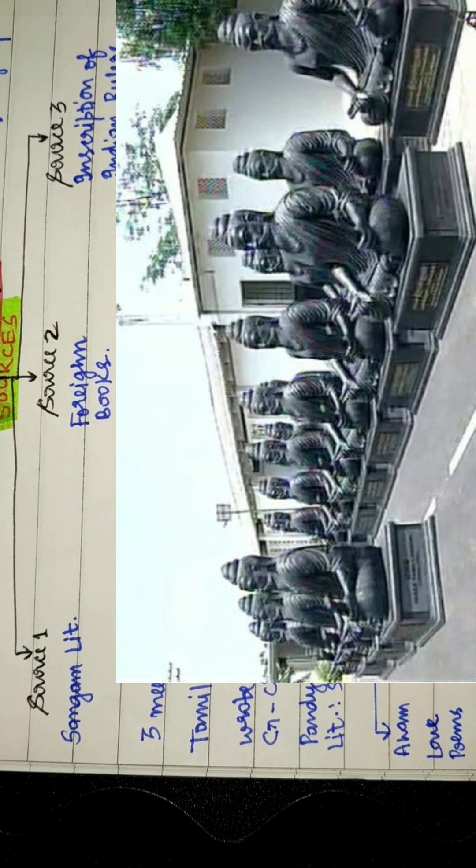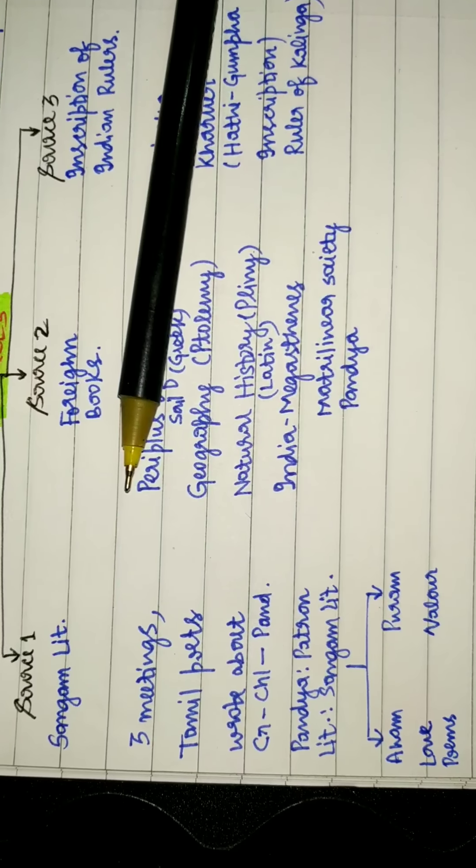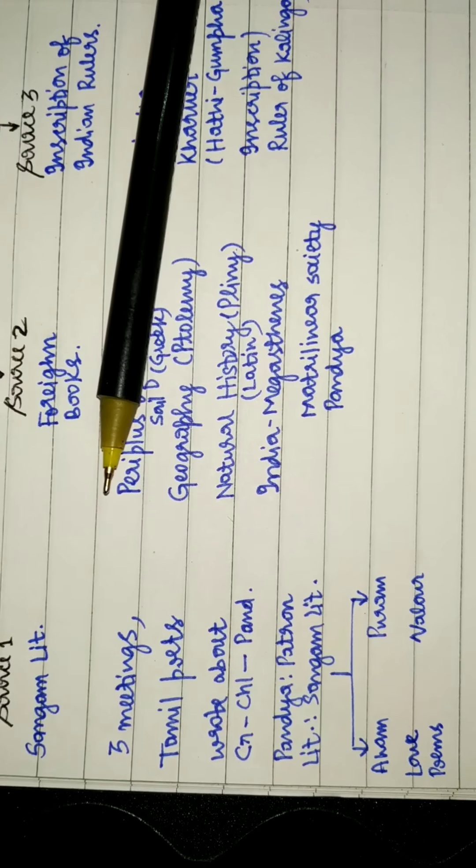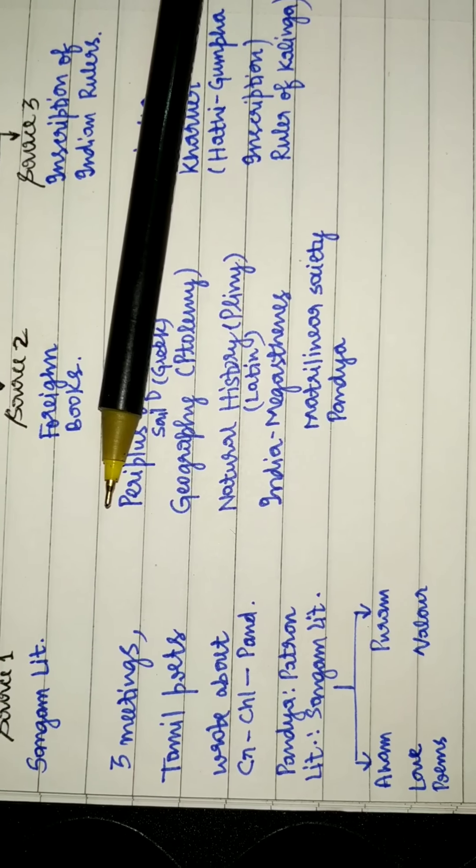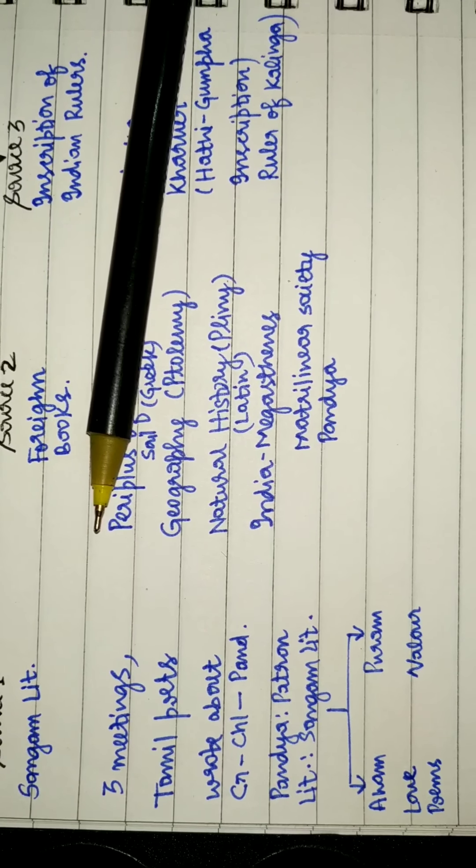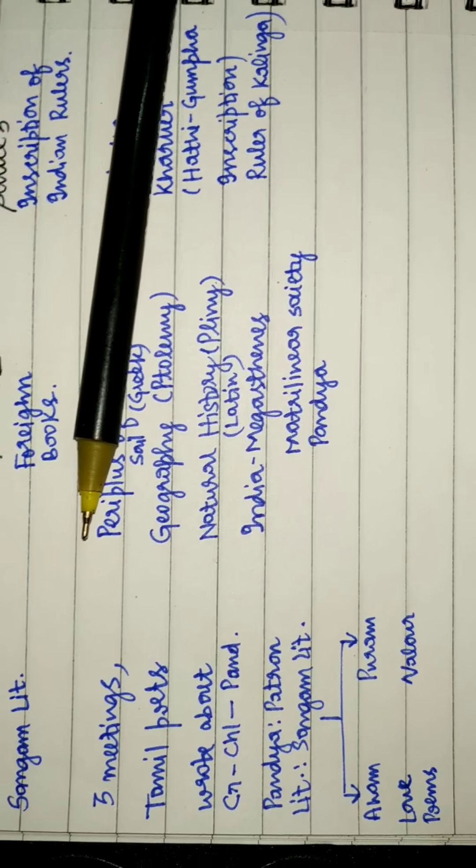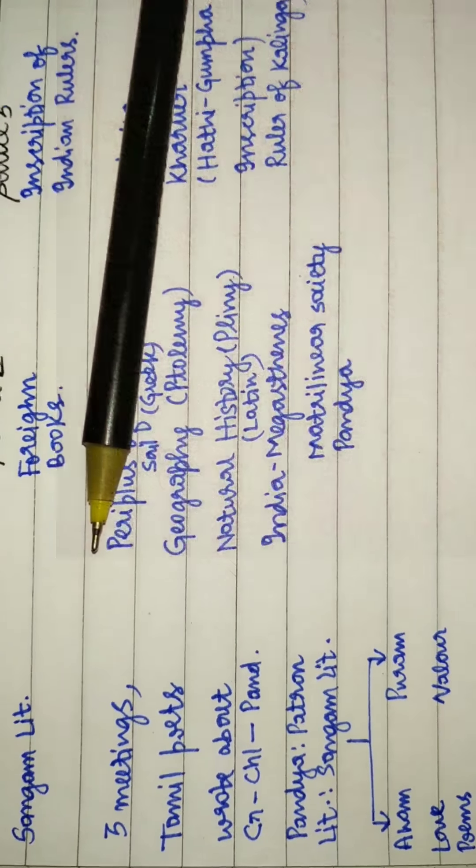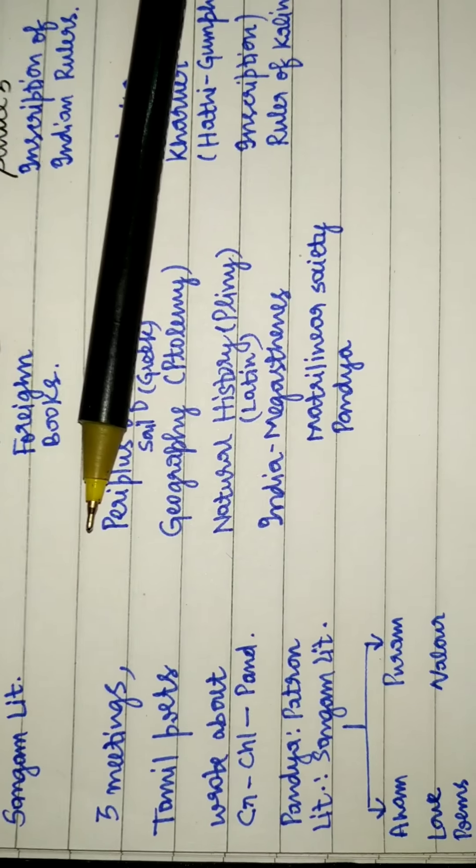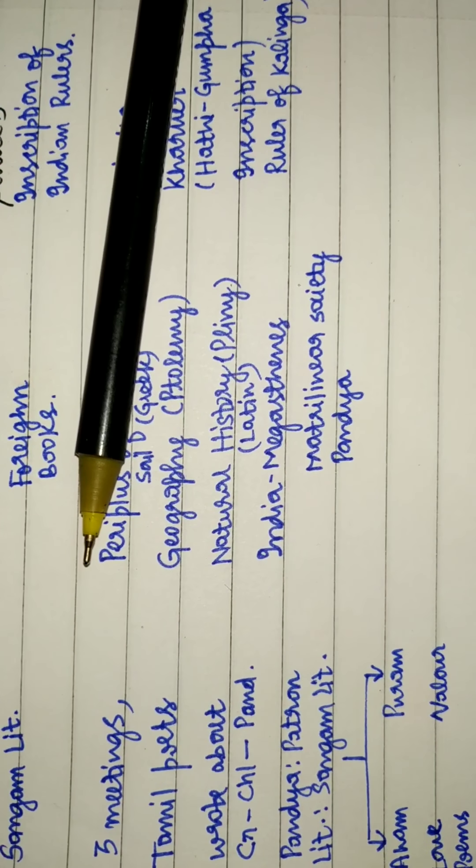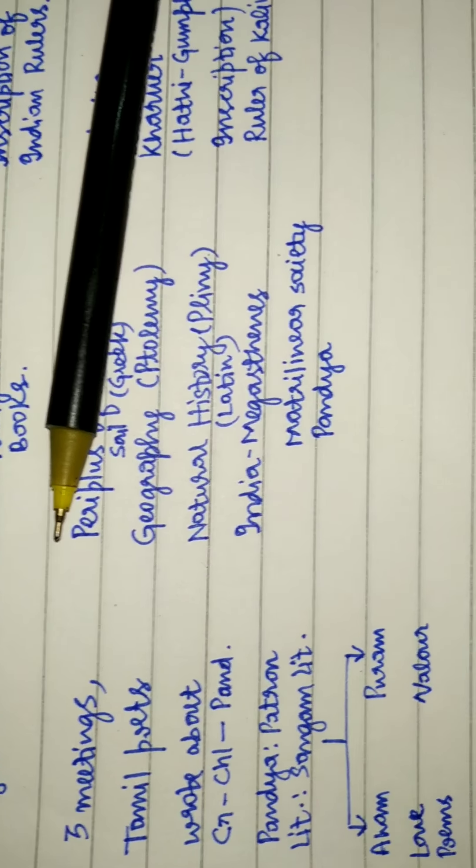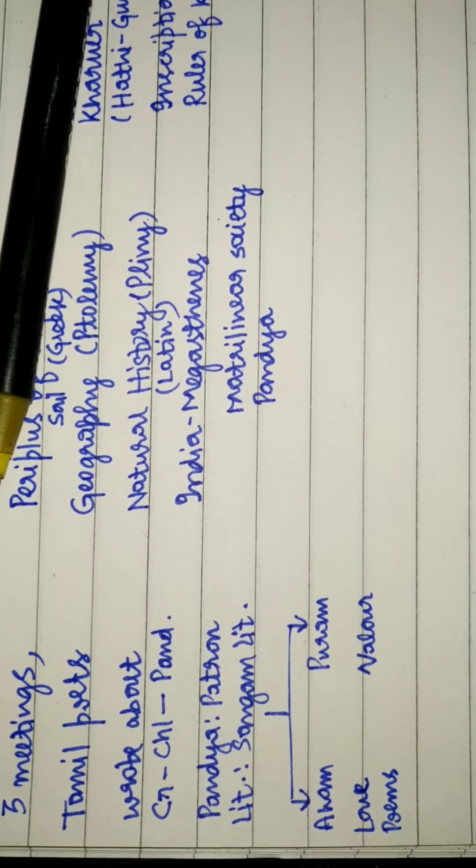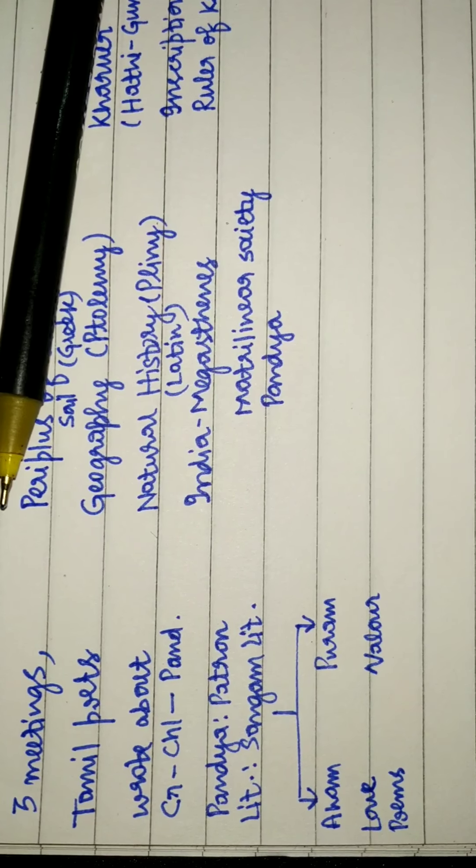The Pandya were the patrons—they provided funds and sponsored these Tamil poets. Since there was an assembly of all three kingdoms assembling together, 'Sangam' in Hindi means assembly, hence all the written records are known as Sangam literature. The Sangam age is from 300 BC to 300 CE. Sangam literature is divided into two parts: Aham and Puram. Aham are the love poems, Puram are about valor and bravery.